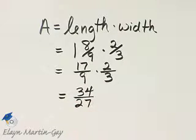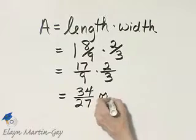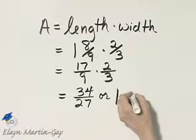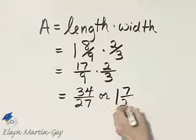That would be 27. Now that's an improper fraction. We can go ahead and write it as a mixed number. That would be then 1 and our remainder is 7 over 27.